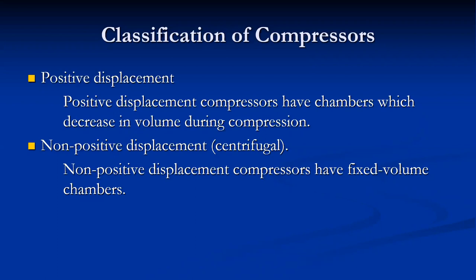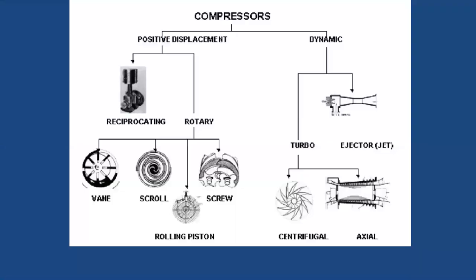In non-positive displacement compressors, the pressure rise occurs because of a change in energy — kinetic energy is converted into pressure energy — working mainly on Bernoulli's equation. Positive displacement compressors have various types: reciprocating compressors and rotary compressors. Not all rotary compressors are non-positive displacement; some rotary compressors fall in the positive displacement category, including vane compressors, scroll compressors, rolling piston, and screw compressors.